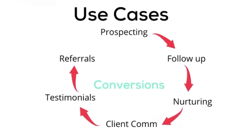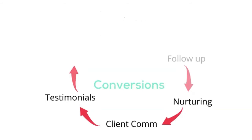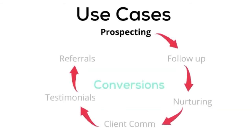Here are our use cases for where we like to build automated workflows: prospecting, follow-up, nurturing, client communication, testimonials, and ultimately getting referrals. When you're prospecting, there are ways to automate it. Typically a manual reach out happens — a LinkedIn message, an email, an SMS — and then maybe someone raises their hand and there's a manual follow-back. The way to automate prospecting is to use tags in contacts.